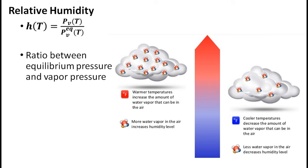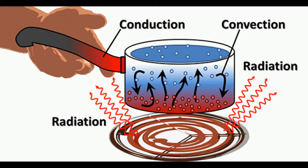Another important concept is heat transfer. Heat can be transferred in three ways: convection, which is moving hot molecules from one place to another; conduction, the transfer of heat through a material; and radiation, light that carries heat, such as the sun's rays.